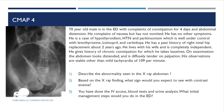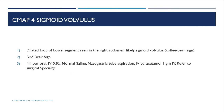After IV access and bloods, initial management for this patient — presenting with constipation, abdominal distension, nausea, and diffuse tenderness — includes IV paracetamol for pain, keep the patient nil per oral, insert a nasogastric tube, start IV fluids, and refer to the surgical specialty.